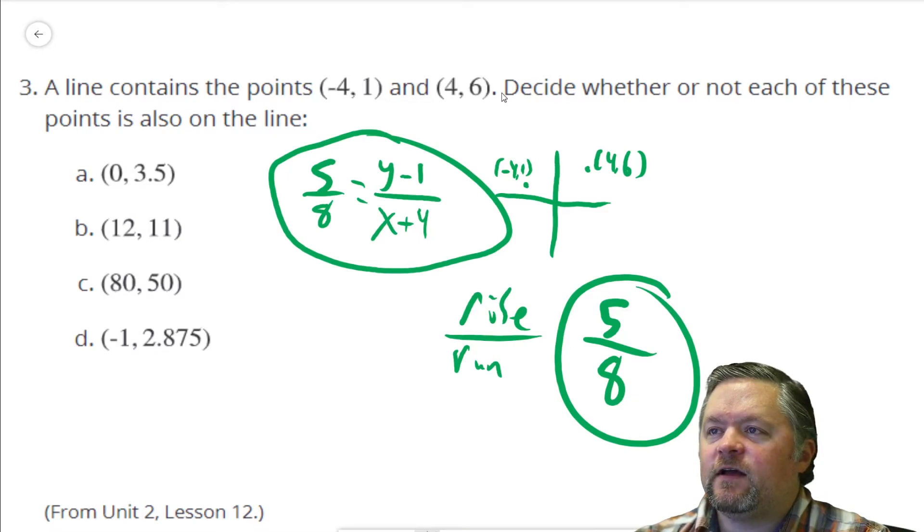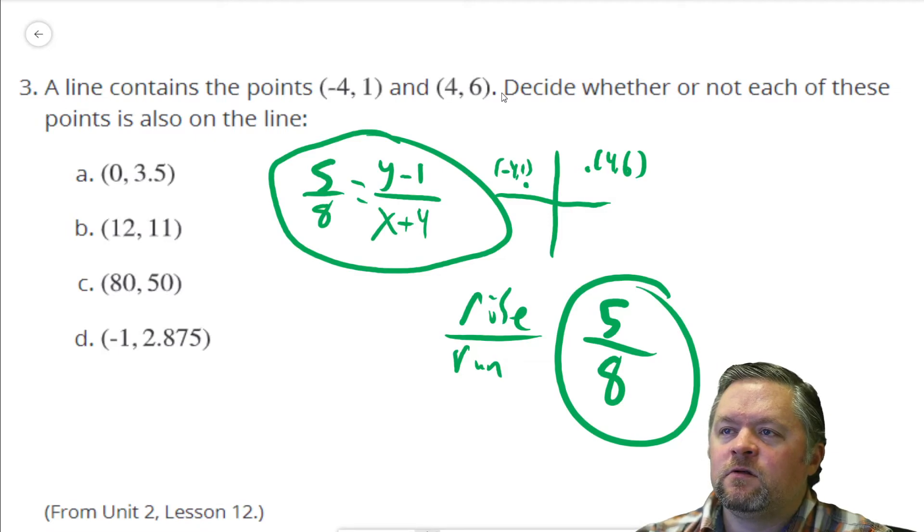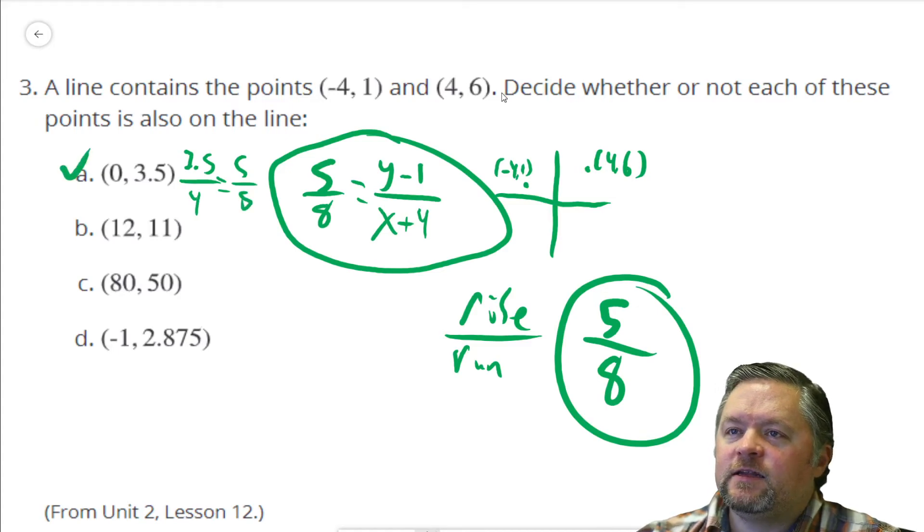3.5 minus 1 would be 2.5 over x plus 4. 0 plus 4 is 4. 2.5 over 4. Double both of those and that's 5 over 8. Is that point on the line? Yes, it is.